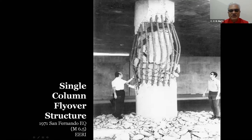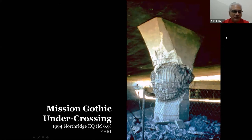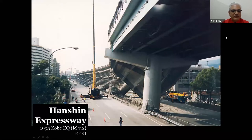1971 was a watershed where we learned that reinforced concrete columns in bridges cannot be designed the same way as columns in buildings. We improved significantly, but even up to 1994 we saw that the use of flared columns led to embarrassments in the post-Northridge earthquake scenario, and in 1995 we saw the catastrophic collapse of the Hanshin expressway.